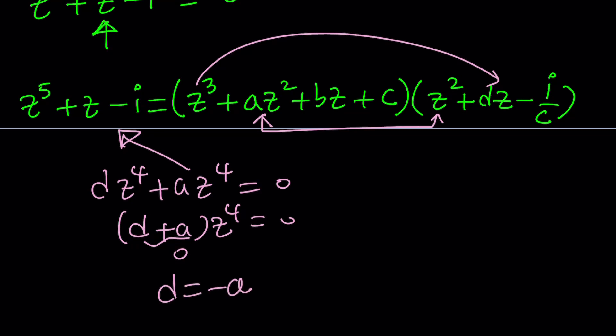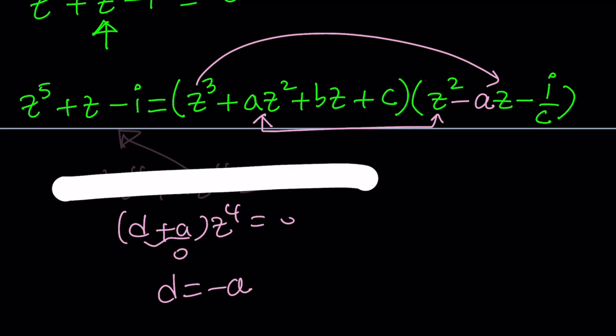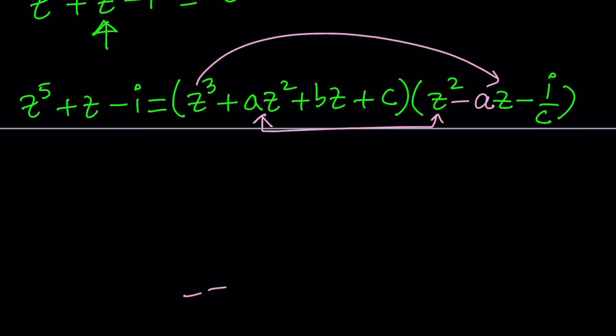So we can go ahead and replace D with negative A, which is going to be a little simpler. So let's go ahead and replace this D with negative A. And now our equation hopefully will be a little nicer.